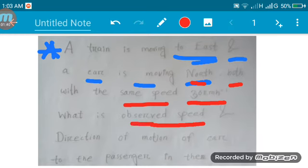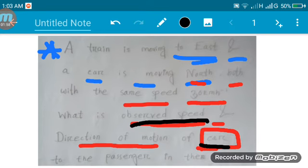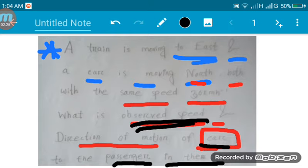The observed speed means what? It's asking for the direction of motion of the car to the passenger in the train. The observed speed of the car relative to a passenger in the train - that's the relative speed. This is the relative velocity of the car with respect to the train. We need to find the relative velocity.